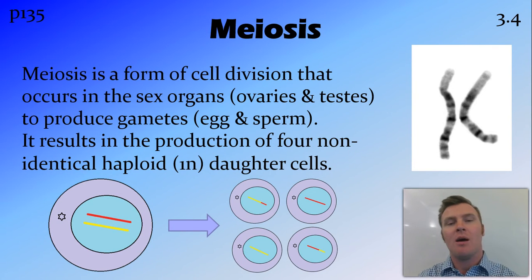First, what is meiosis? Meiosis is cell division, as I mentioned before, and it occurs in the sex organs. So in humans, this is the ovary and the testes. And it produces gametes, which in humans are the egg and sperm.